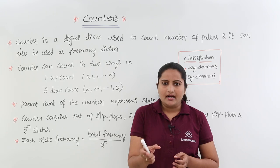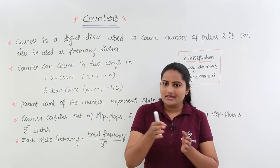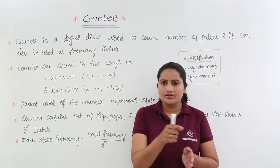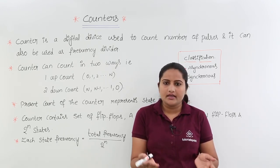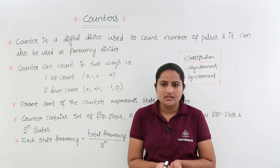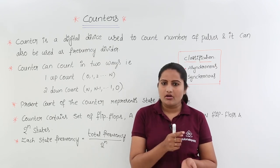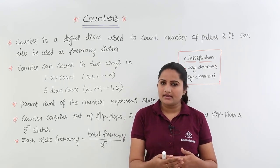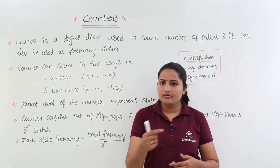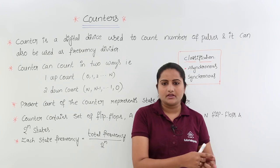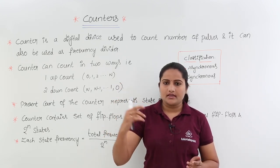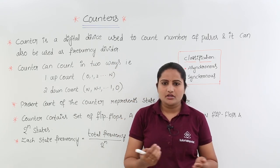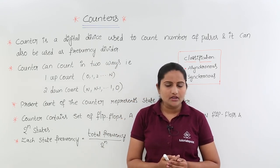In a shopping mall you need to add extra amount to an already existing price. In EVMs, for example in voting machines, when one vote is already there and another person votes for the same party, you need to add to that count. That is up counting — 0, 1, 2, 3 and so on — that is one application of up counter.